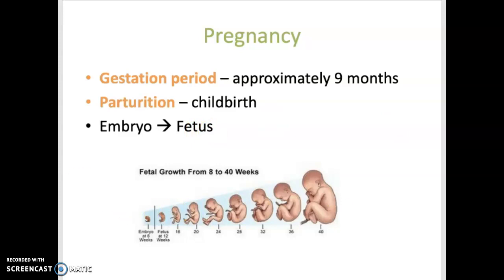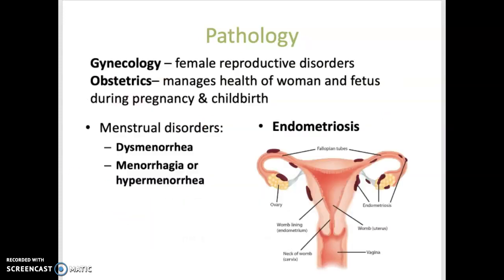The next section covers diseases and conditions related to the female reproductive system, starting with menstrual disorders. Dysmenorrhea — the prefix 'dys-' means difficult or painful — so this means painful menstruation. Menorrhagia or hypermenorrhea is excessive bleeding during menstruation.